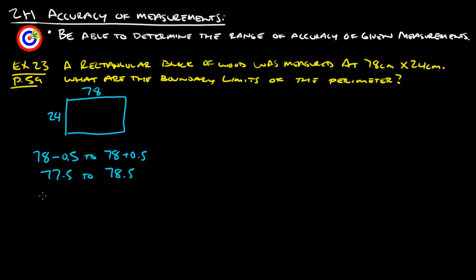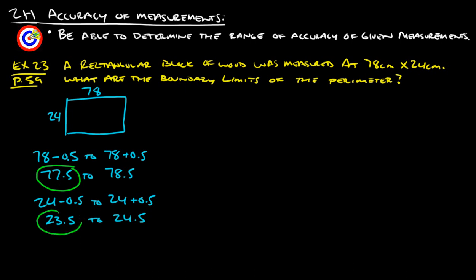For the width, we take 24 minus 0.5 to 24 plus 0.5, which gives us 23.5 to 24.5. So the two measurements 77.5 and 23.5 would make the smallest possible perimeter, and 78.5 and 24.5 would make the largest possible perimeter.